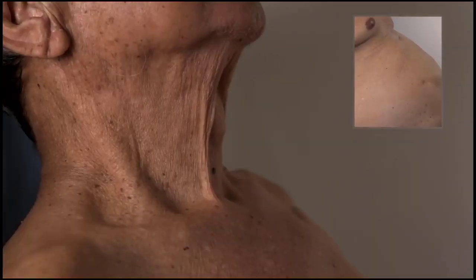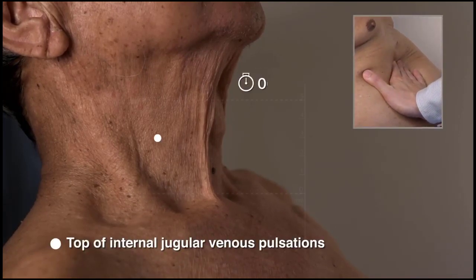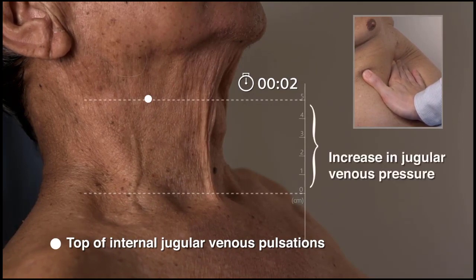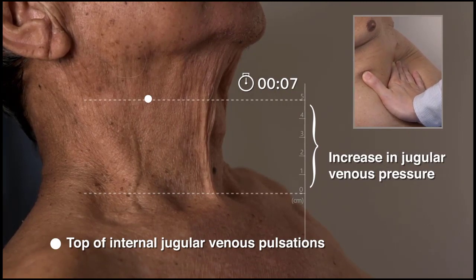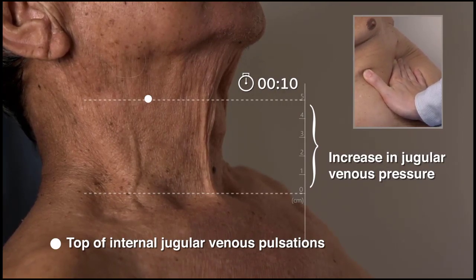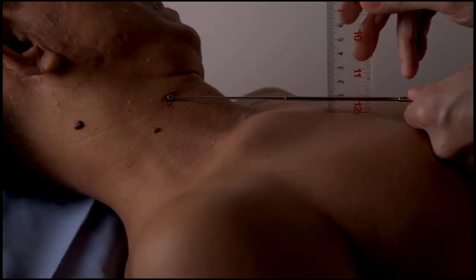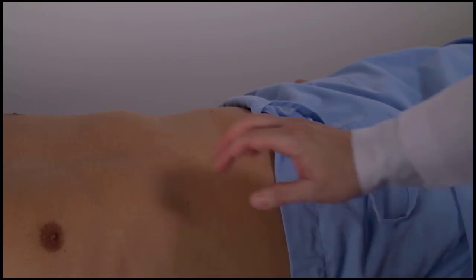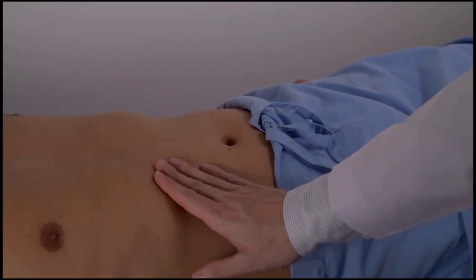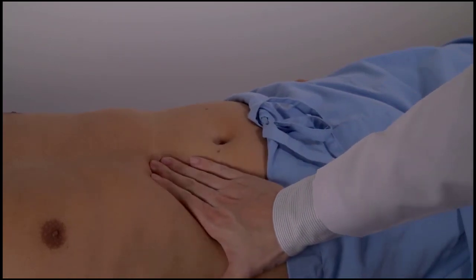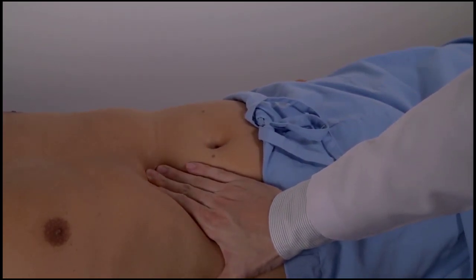The abdominal jugular reflux test measures the jugular venous pressure through the distension of the internal or external jugular vein while the abdomen is being compressed. It can be used to detect elevated right atrial pressure and is an important bedside examination to detect the cause of dyspnea or edema. After you have measured the jugular venous pressure, press on the patient's abdomen, either the right upper quadrant or the area between the epigastrium and the umbilicus. It is prudent to apply the pressure gradually and gently to avoid eliciting hepatic pain in patients with heart failure.